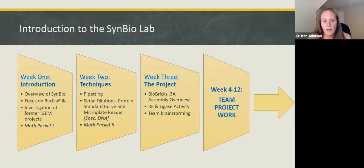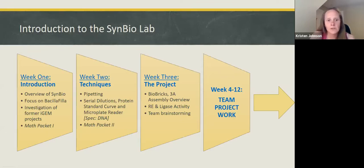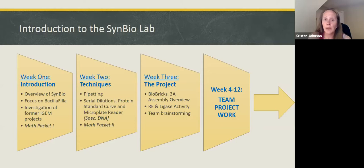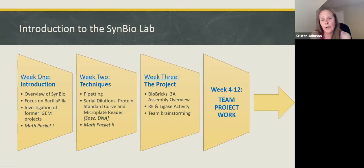At the bottom of weeks one and two, there are math packets. Because students come in with different math skill sets, these cover basic chemistry math for dilutions and similar calculations, and students work on those outside of lab as homeworks. In week two, we get down and dirty with techniques to make sure all students are on the same page — learning basic pipetting skills, how to use pipette pumps and micropipetters, and which ones to use at different times. We do this through a serial dilution lab where they practice what they've done on paper in the math packet, doing a protein standard curve, and then utilize the microplate reader.